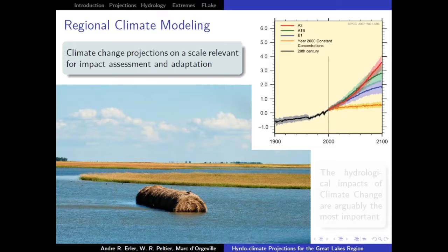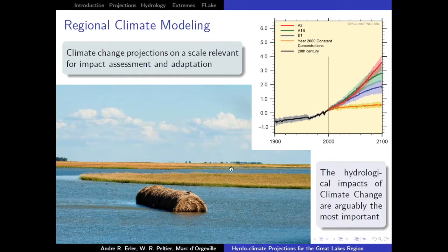That's also what I did for my PhD with Dick Peltier in Toronto, where I focused on Western Canada. Now I'm working on the Great Lakes region. Regional climate modeling, or dynamical downscaling, basically has the goal of providing climate projections on a scale that is relevant for impact modeling or climate policy. Most people would probably agree that hydrological impacts of climate change are the most relevant now.